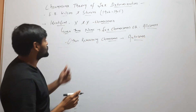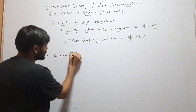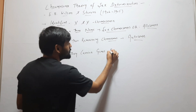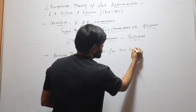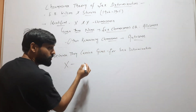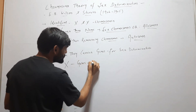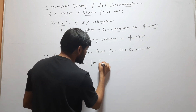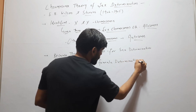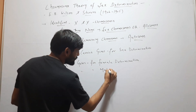Why were they called sex chromosomes? They were called sex chromosomes because they carry genes for sex determination. X carries genes for female determination, and Y carries genes for male determination.